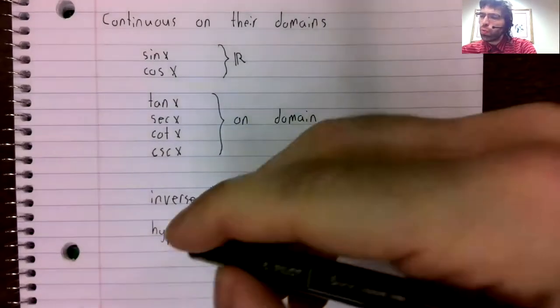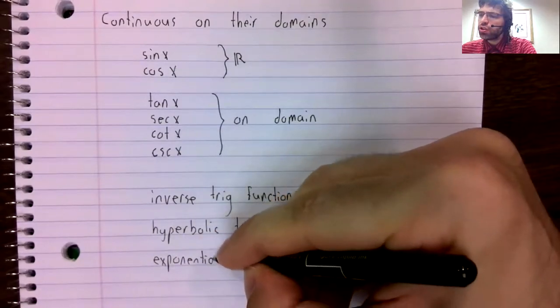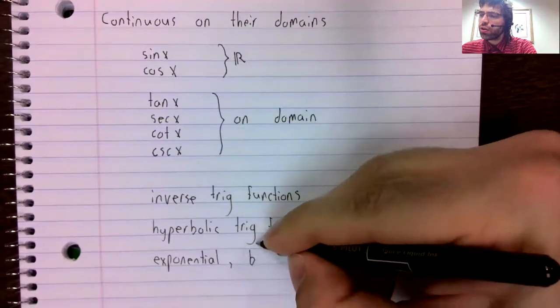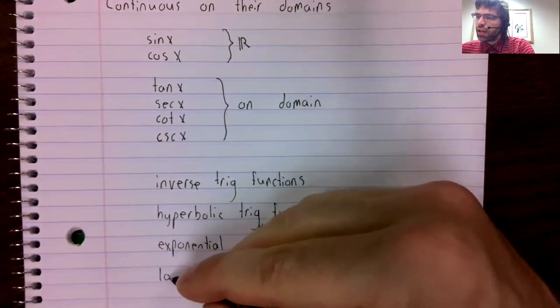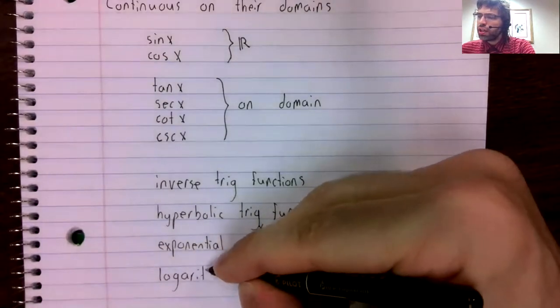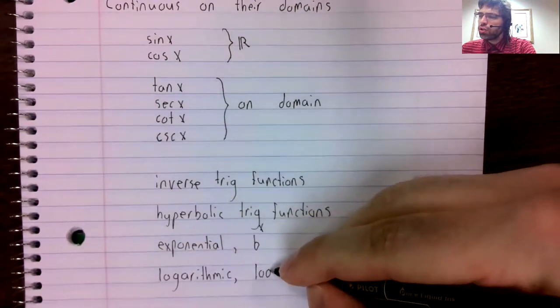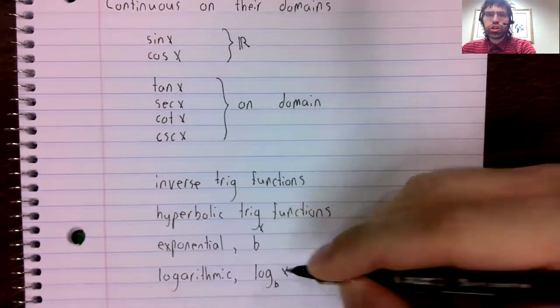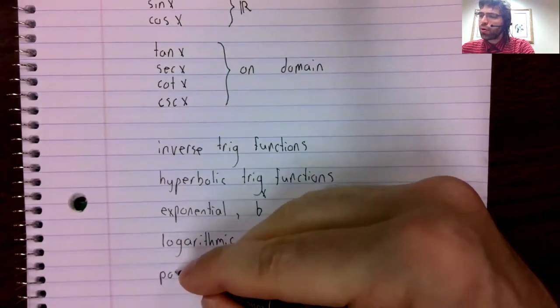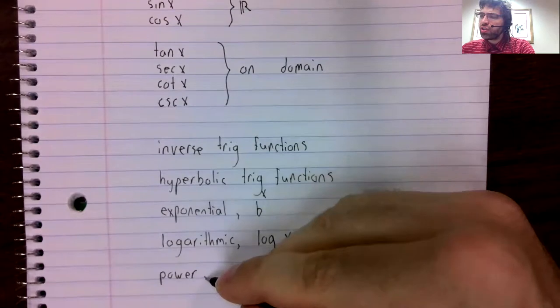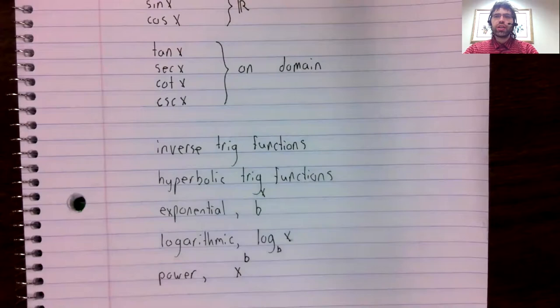Exponential functions are continuous on their domains, and so are the inverses: the logarithmic functions. Power functions are continuous on their domains.